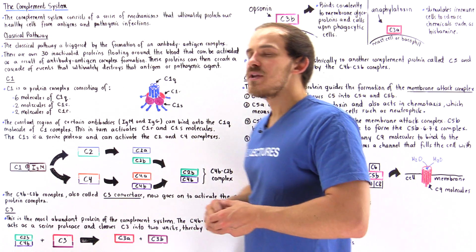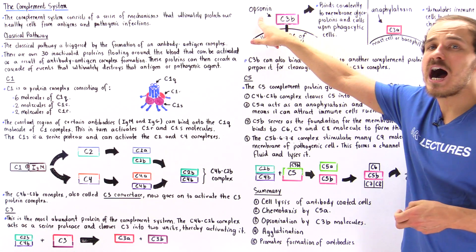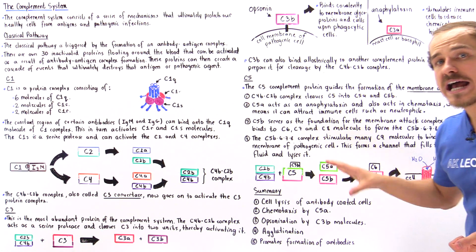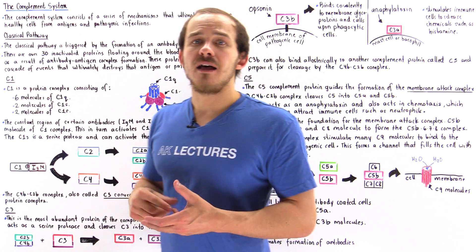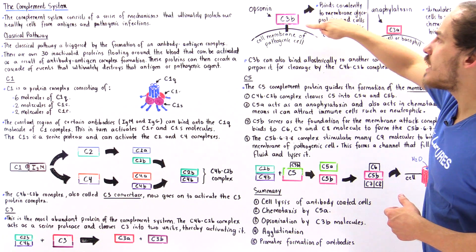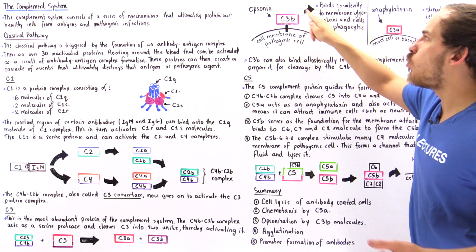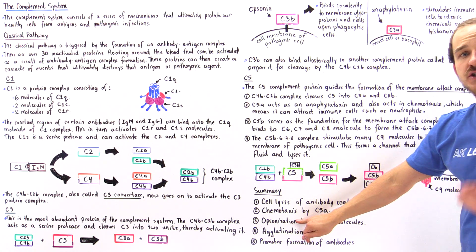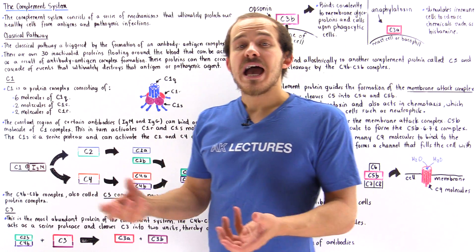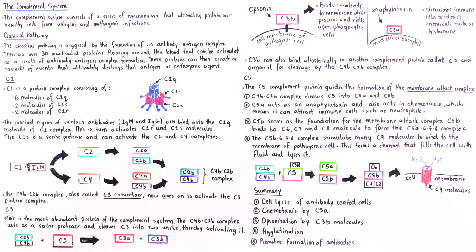What about C3B? C3B has two different functions. One of its functions is to act as a molecule known as an opsonin, which carries out a process known as opsonization. This basically stimulates phagocytic cells of our immune system — it calls upon them. C3B binds onto a special glycoprotein found on the membrane of that particular pathogenic cell, and once bound, it acts in opsonization, calling upon phagocytic cells such as macrophages or neutrophils. These phagocytic cells then come nearby and engulf those pathogenic agents.